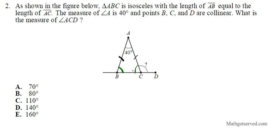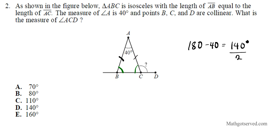The first goal is to find the value of the two base angles. The sum of the angles of a triangle is 180 degrees. So I subtract angle A from 180: 180 minus 40 gives me 140. That is the sum of the two base angles. Since they're both equal because of the isosceles nature of the triangle, I divide by 2, giving 70 degrees for each base angle.